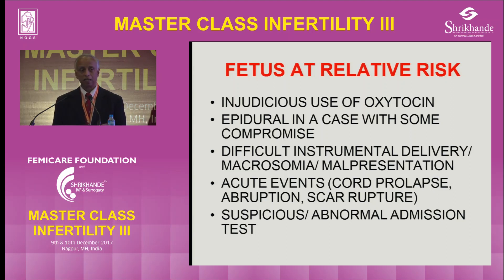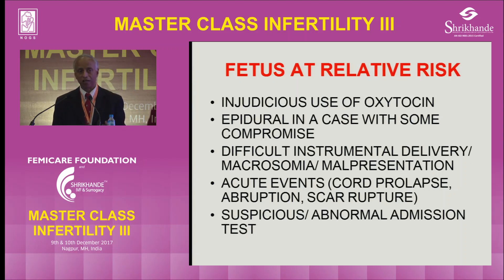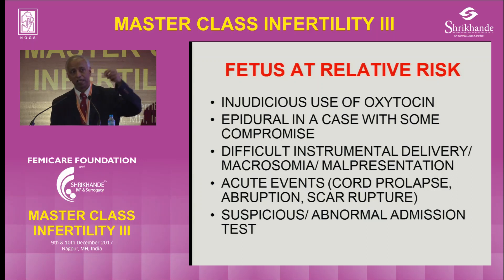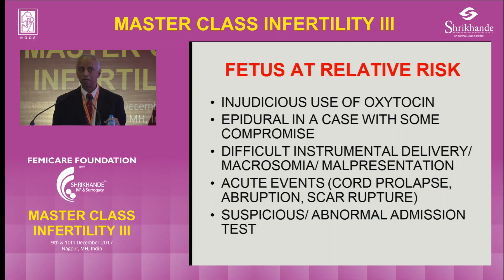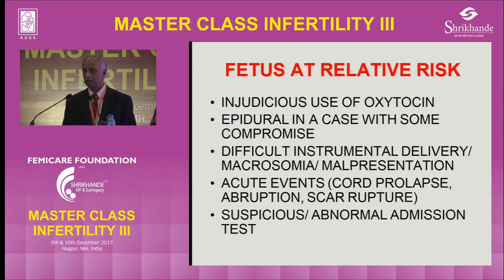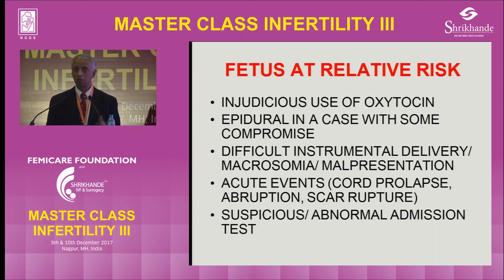Second, in the late first stage and second stage of labor, there is a reflex release of oxytocin called the Ferguson reflex — when the head distends the upper vagina and cervix, uterine activity shoots up tremendously. So if you are using oxytocin in the late first stage and second stage, contractions and heart rate must be monitored. If contractions exceed 5 in 10 minutes, you must stop the oxytocin.